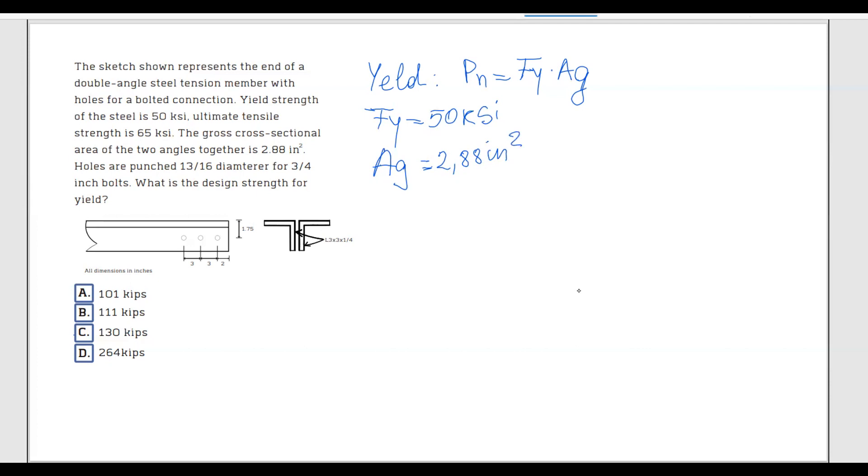Now I want us to focus on what the problem is asking us to calculate. The problem is asking for the design strength for yield. Pay attention to this: when you hear the word design, that means we need to calculate the reduced strength for yield, which means we have to calculate Phi Pn.